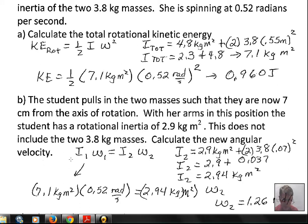I'm picking a number here, 2.9 kg·m² for rotational inertia of the person. Again, calculate the total rotational inertia: 2.9 for the body, two masses of 3.8 kilograms each, and now only 0.07 meters from the axis—that's squared. So mr² for each mass is being calculated.